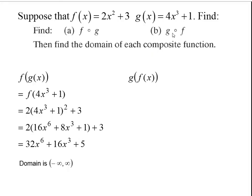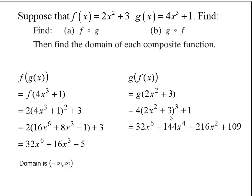For letter B, g composed with f: first consider the domain of f, the inner piece. f is quadratic, so its domain is all reals. Now composing: f is 2x squared plus 3, which gets plugged into every variable of g. I could cube all of this out — the result is another sixth-degree polynomial. Again, the domain is all real numbers.